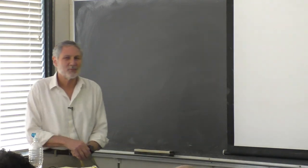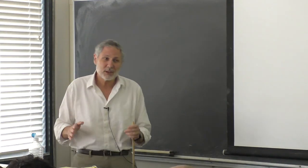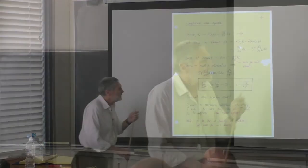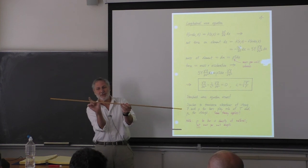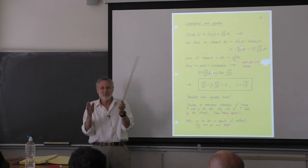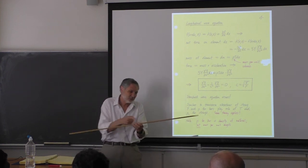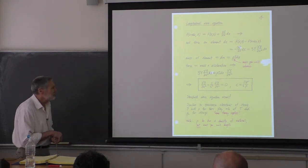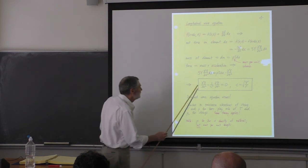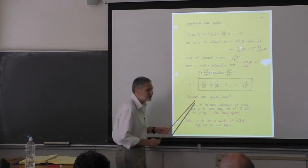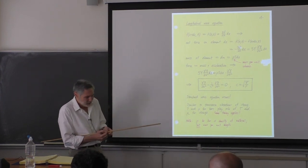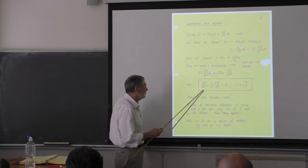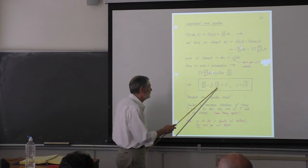We started talking about waves and bars, and the kind of waves we're talking about are longitudinal waves. If you've got a bar, the wave motion is along the bar. We derive the standard wave equation — two spatial derivatives, two time derivatives — where this is the displacement of a little bit of mass.